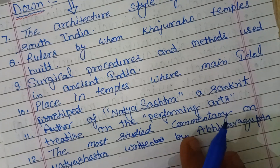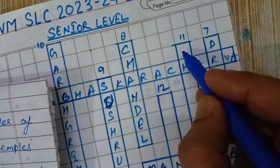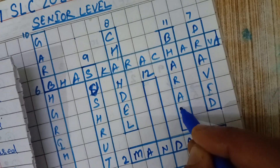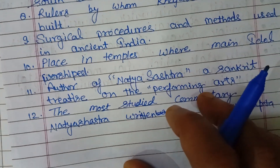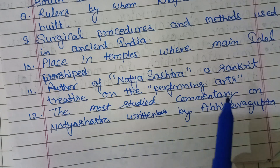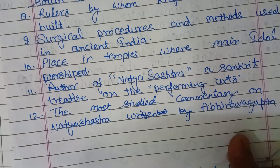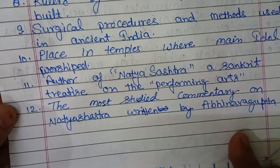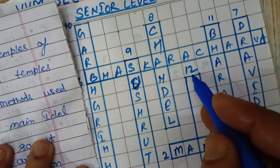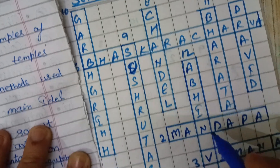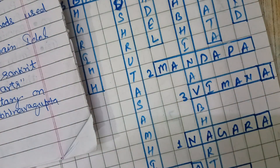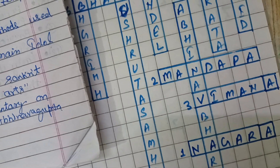Question eleven downward: The author of Natya Shastra, a Sanskrit treatise on performing arts, is Bharata — B-H-A-R-A-T-A — placed at eleven downward. The last question, twelve downward: The most studied commentary on Natya Shastra was written by Abhinava Gupta, and the commentary is known as Abhinavabharti — A-B-H-I-N-A-V-A-B-H-A-R-T-I.